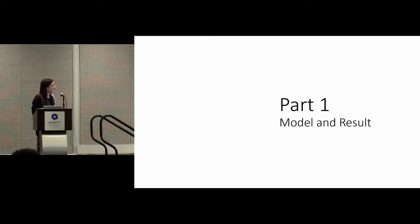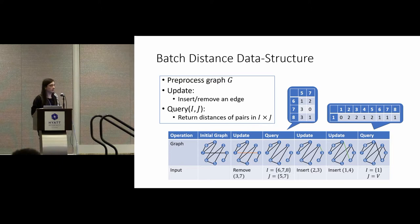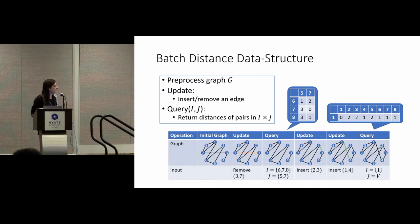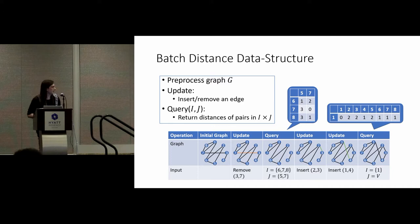So try to actually work with polynomial matrices and not integral ones. Part one: model and result. What kind of data structure are we analyzing? We are considering the following dynamic algorithm — it's kind of a batch distance data structure. After some initial pre-processing of a graph, the data structure must support update operations and query operations. The update operations allow for adding or removing an edge. When we query the data structure, we must specify two sets of nodes I and J, and then the data structure will tell us all distances between start nodes in I and target nodes in J — a sub-matrix of the distance matrix.